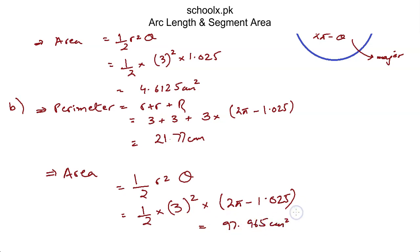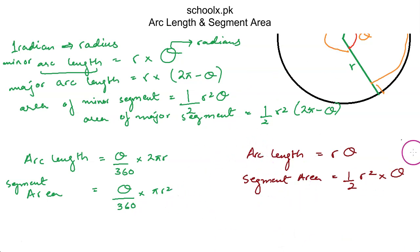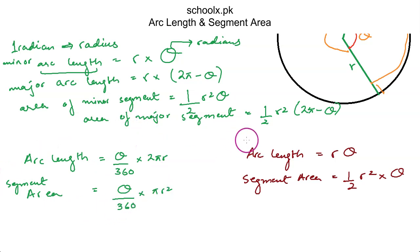This topic is relatively easy in A-levels. You only need to learn these two pairs of formulas: arc length and segment area — either in degrees using (θ/360) × 2πr and (θ/360) × πr², or in radians using rθ and ½r²θ.